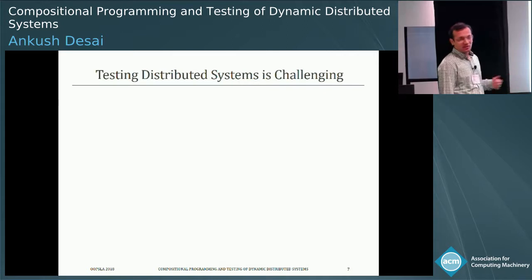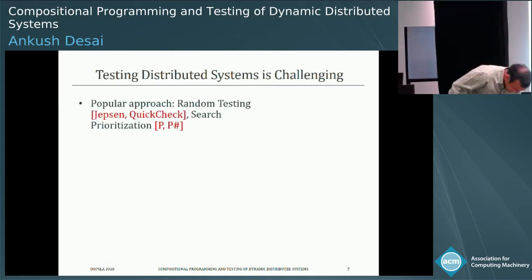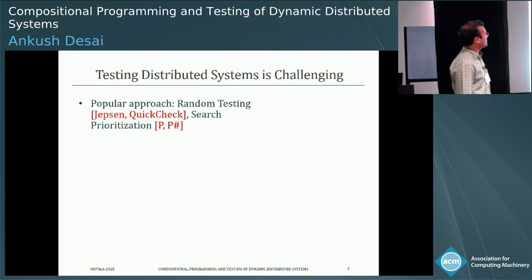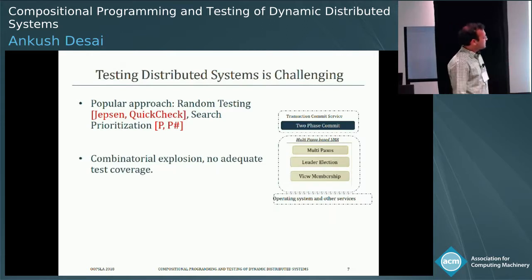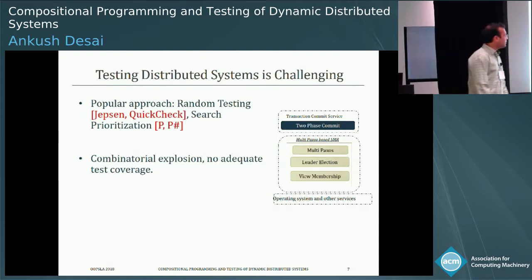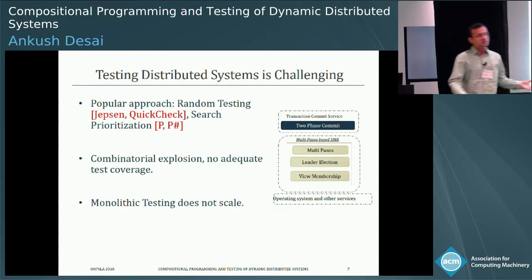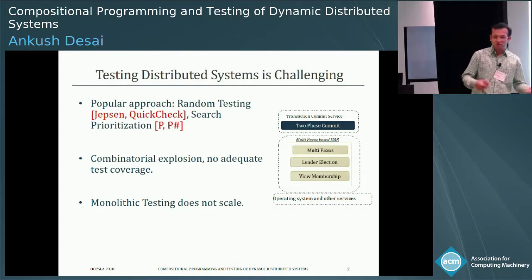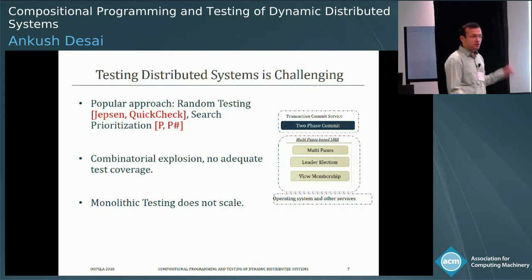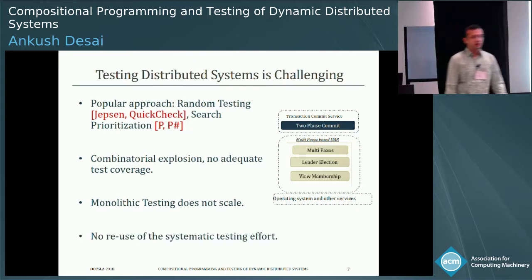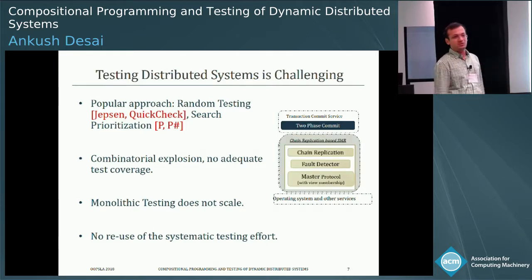Testing such a system is equally hard. The most popular approach is random testing — tools like Jepsen or QuickCheck — or search prioritization. But for a complex system like this, there is combinatorial explosion and you don't get adequate coverage. These tools create a monolithic instance of the system and introduce failures like message loss, node failure, or network partitions. Monolithic testing does not scale. A further problem is the lack of reuse of systematic testing — if you replace multi-Paxos with chain replication, you must redo the entire monolithic test.